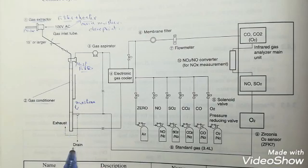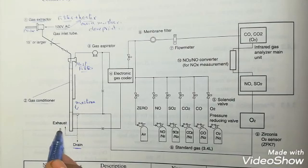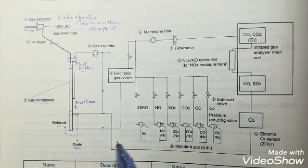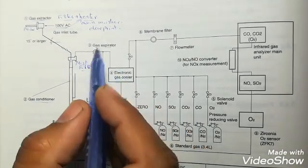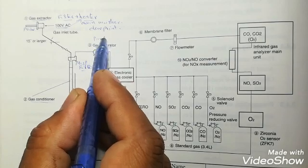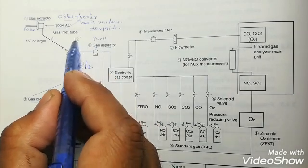Moisture is drained out in this gas conditioner and then it is exhausted outside the panel.